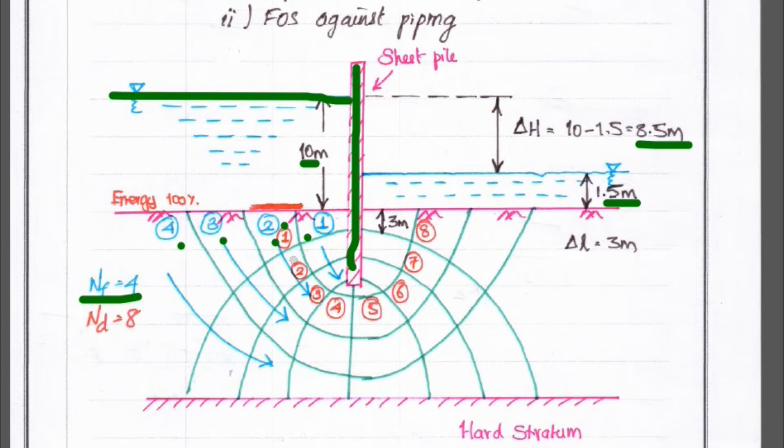So, the drops count is 1, 2, 3, 4, 5, 6, 7, 8. So, the nd value is 8.